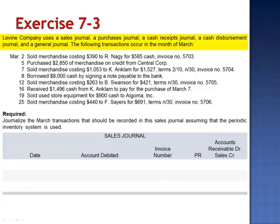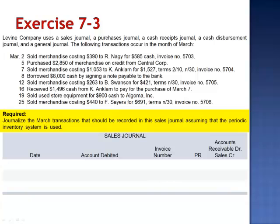Exercise 3. Levine Company uses a sales journal, a purchases journal, a cash receipts journal, a cash disbursements journal, and a general journal. The following transactions occur in the month of March, and we're asked to journalize the March transactions that should be recorded in the sales journal, assuming the periodic inventory system is used.